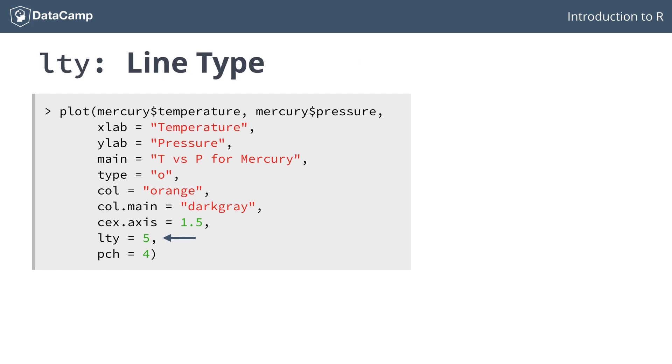The lty argument specifies the line type. A line type of 1 is a full line. And the types 2 to 6 are all different types of lines, like you can see here.